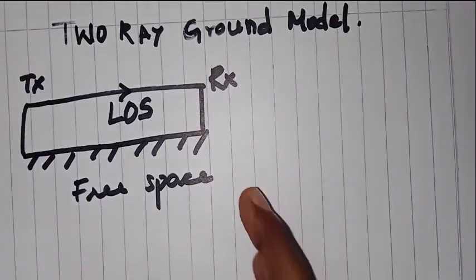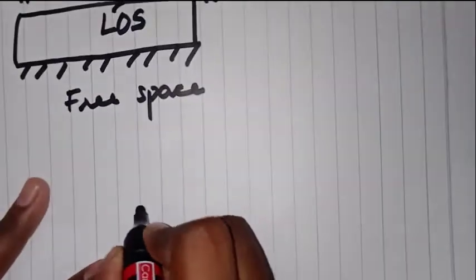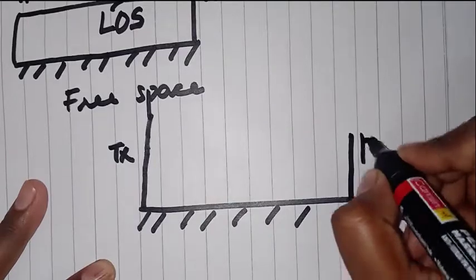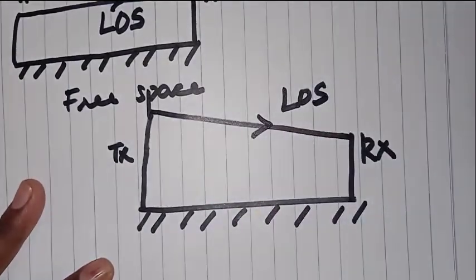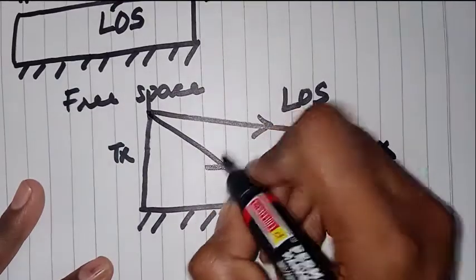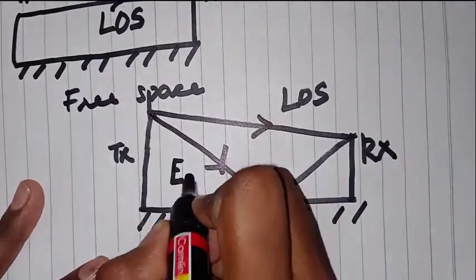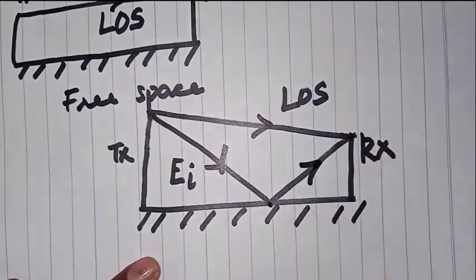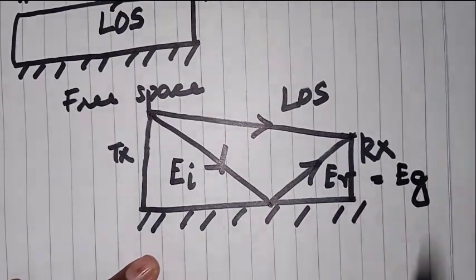In reality, there is not only line of sight; we will have additional features to analyze. We have a ground surface with a transmitter and a receiver, and we send data between them. In line-of-sight communication, we will have a signal that also touches the ground surface at a point, which is referred to as the energy reflected from the ground. These are the two different aspects of the 2-ray ground model.